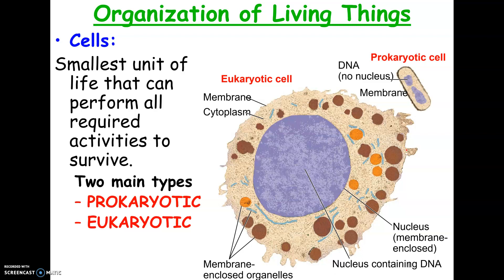Multicellular organisms like us have cells that technically can't survive on their own. A muscle cell on its own will die because we have a division of labor — our cells depend on each other. Muscle cells have a particular job, fat cells have a job, nerve cells have a job, and epithelial cells have a job. All these different cell types work together to keep you alive, making us much more complicated than a simple bacterium.